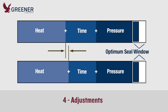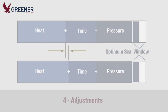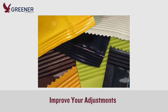Adjustments that cause small changes in one sealing element can often be compensated for with small adjustments to another. The reduction in dwell time, shown by these graphs for example, has been offset by additional heat to maintain seal quality. You can take steps that improve the accuracy of your adjustments and help maintain total heat, time, and pressure within your optimal sealing window.